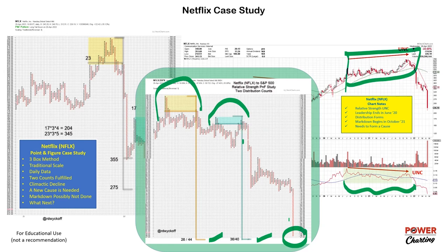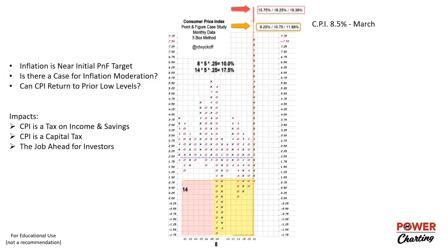The last thing before turning it over: a point figure CPI chart back to 2000. CPI just hit eight and a half in the March number. Updated through seven and a half from the end of last year, and now eight and a quarter to 11.88 — we're right in the middle of this objective range. Just a quick update, and we'll be right back.